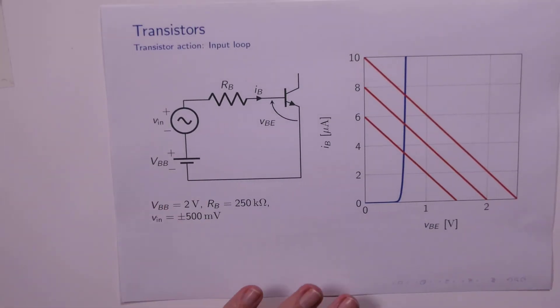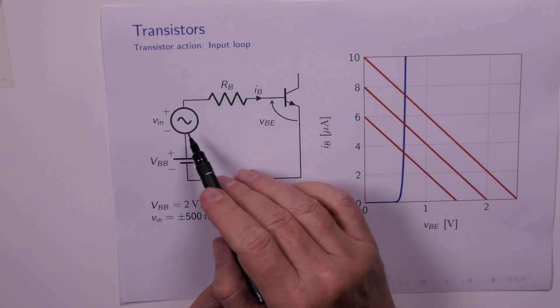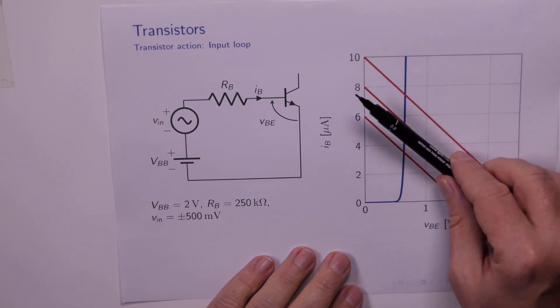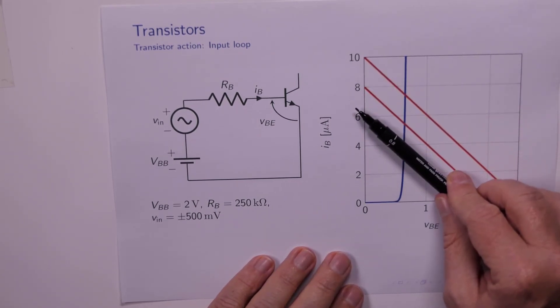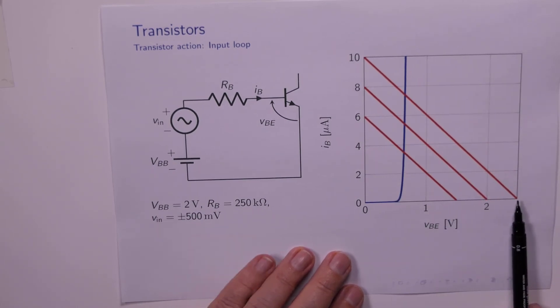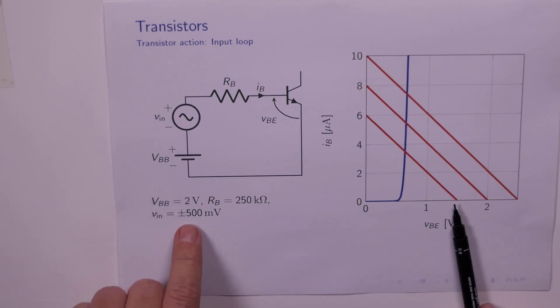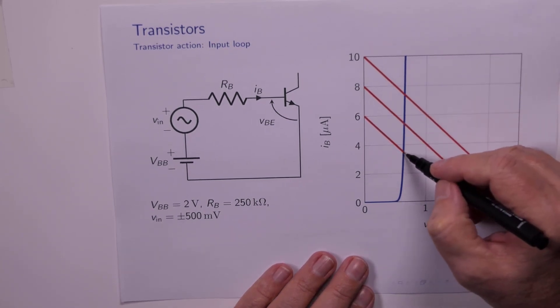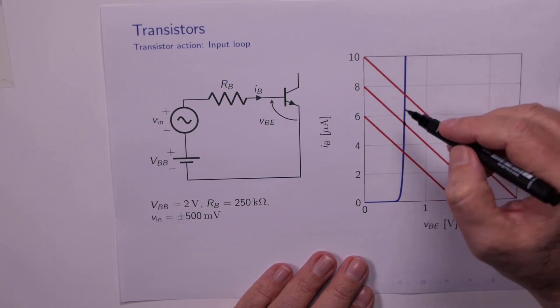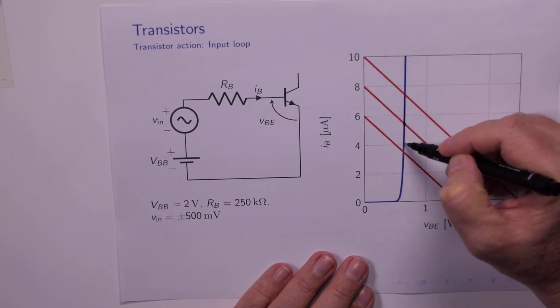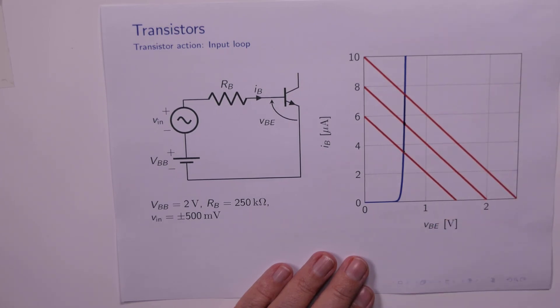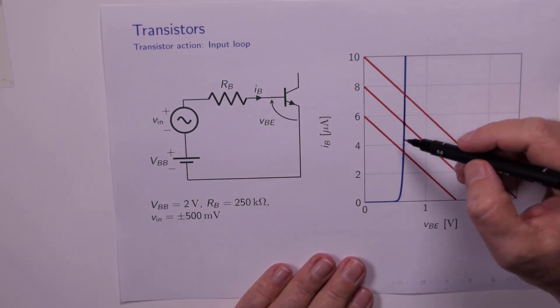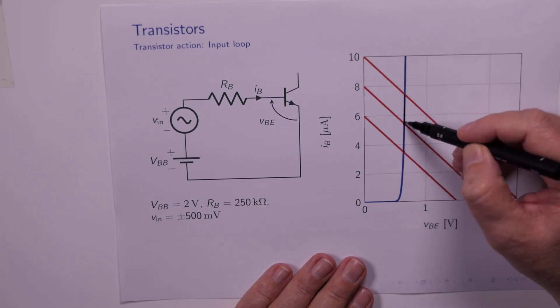So our equation is the same. Let's imagine that VIN can now go between plus or minus half a volt. That means that our load line can now move up and down. It can go up by half a volt because of VIN, and it can go down by half a volt when VIN is minus 500 millivolts. That means that our operating point which started out there when VIN is 0 can move up to this point here and down to that point there. So as VIN is going up and down, that causes IB to go up and down simply because the operating point moves up and down the device curve here.